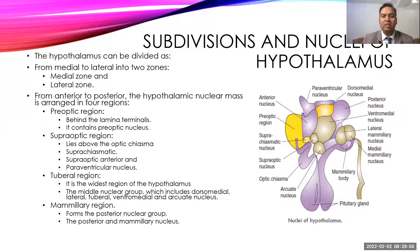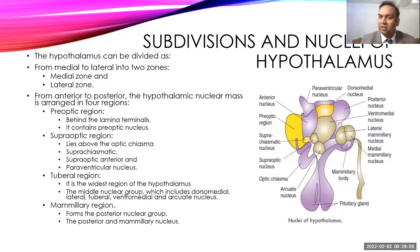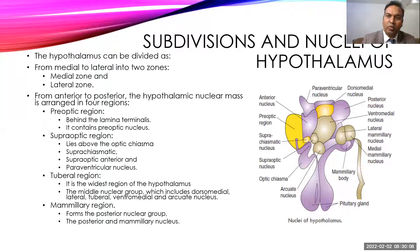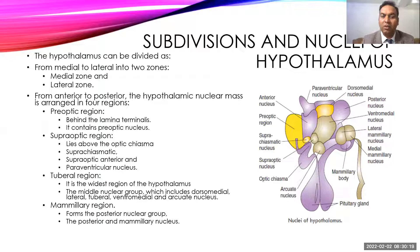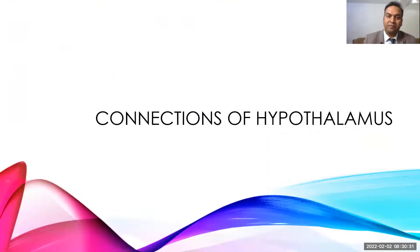The pre-optic region lies between the lamina terminalis and the pre-optic nucleus. The supra-optic region lies just above the optic chiasma and contains the suprachiasmatic nucleus, supraoptic anterior nucleus, and paraventricular nucleus. The tubular region is the largest region and contains the dorsomedial, lateral, ventromedial, and arcuate nuclei. The mammary region is the posteriormost part and contains the posterior nuclear group and mammillary nucleus.